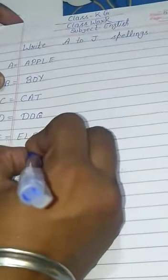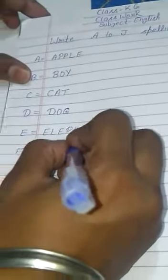F equal F, I, S, H. Fish, fish means musli.